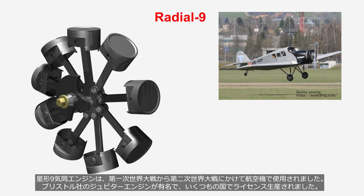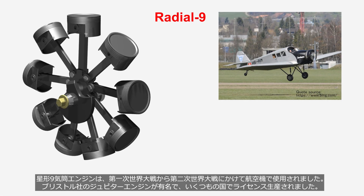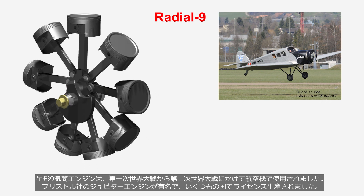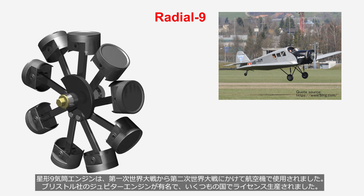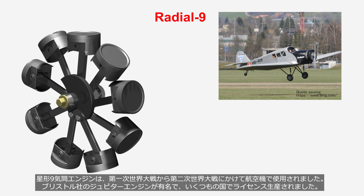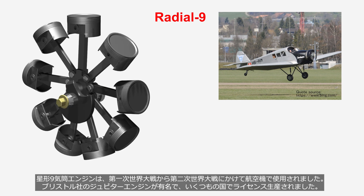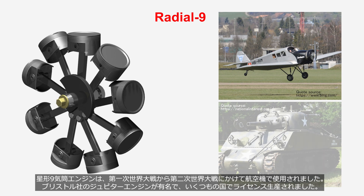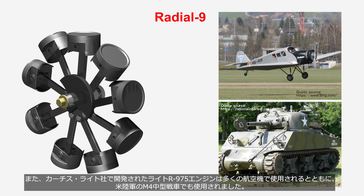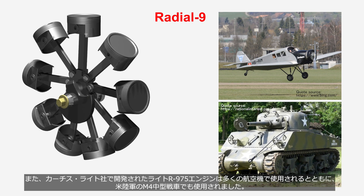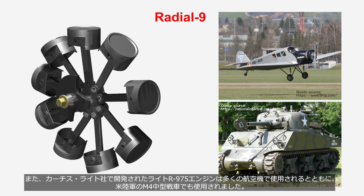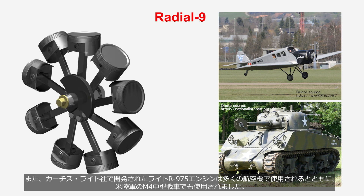Radial nine-cylinder engines were used in aircraft from World War I to World War II. The Bristol Jupiter engine, manufactured by Bristol Aeroplane Company, was particularly famous and licensed for production in several countries. The R-975 engine, developed by Curtis Wright Corporation, was not only used in numerous aircraft but also employed in the U.S. Army's M4 medium tanks.